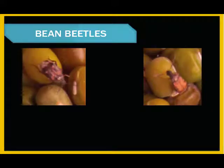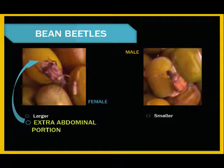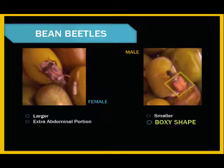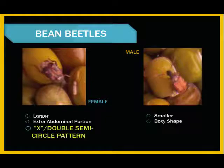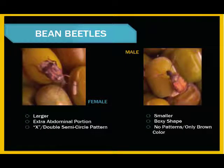So here we are faced with this question: are we looking at a male or a female bean beetle? Using what you know about sexual dimorphism and your own observations, you can easily tell the difference. Females will generally be a bit larger than the males and have an extra area near the end of the abdomen, whereas the males appear to have a truncated and boxy abdominal shape. However, perhaps the most distinct difference between the sexes is the variation in coloration and patterns. The female will have an X, or double semi-circle shape, design on her back, while the males will have nothing but the brown color.